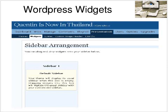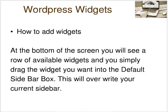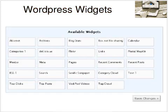So how do we add these widgets? At the bottom of the screen we just looked at, you'll see a row of available widgets. You simply drag the widget with your mouse to the default sidebar box. Now remember, when you start adding widgets, it will overwrite your current sidebar, so you can now customise the sidebar very easily with your widgets.